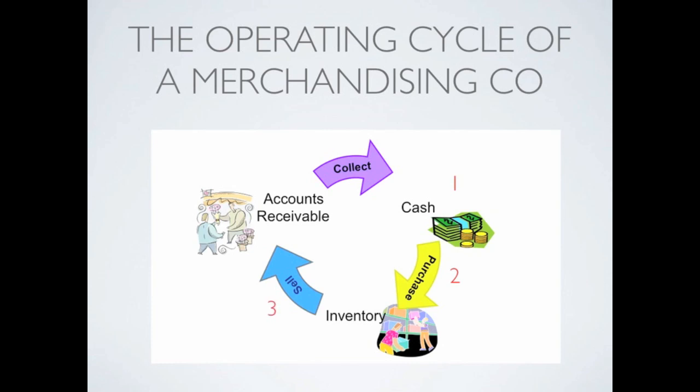Step three would be to sell the inventory. There are a couple of ways you can sell inventory — you can sell it for cash, or you can sell it on account. If you sell inventory for cash, you skip step four in this cycle and go directly back to step one. However, if we sold inventory on account, we need to eventually collect on that sale to give us our cash, and that starts our cycle all over again.